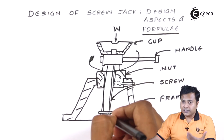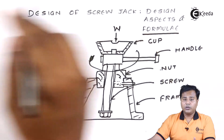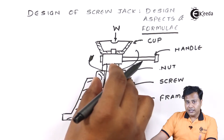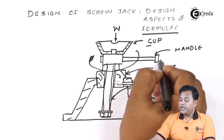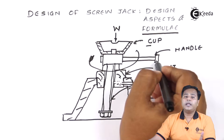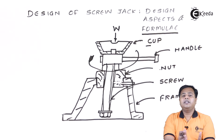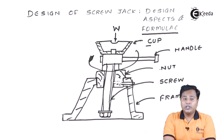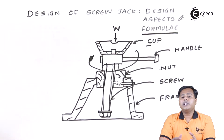We have to design this screw such that it will sustain not only the axial load but also the rotational load. Rotational load generally brings shear stress into picture. Accordingly, we have to design the nut, the frame, the cup, and very importantly, the handle — which must sustain not only axial loading but also rotational loading. So basically, there are two functioning aspects: axial loading, which brings compression, tension, and crushing into picture; and rotation, which brings shear into picture.